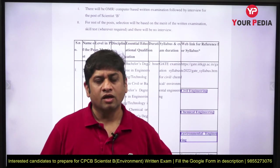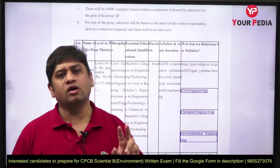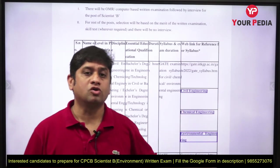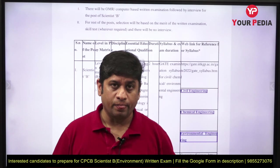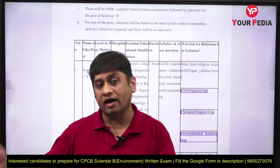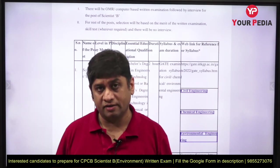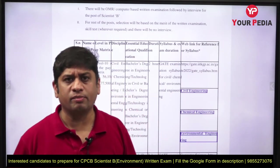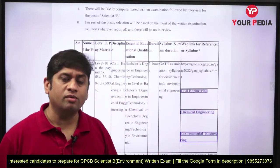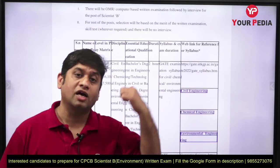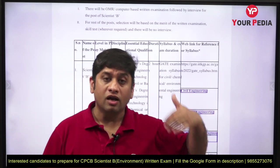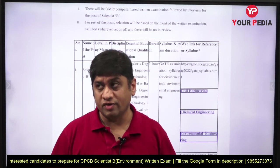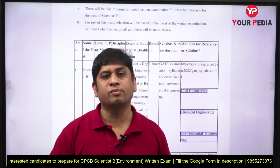The question of whether a civil engineer can write with environmental science still remains unanswered. There are two perspectives here. In the last-to-last year's exam, which was offline, when you went to the examination hall they asked which paper you wanted to write — civil engineering or environmental engineering. Last year the exam was online and they did not give you that option, so civil engineers only received the civil engineering paper.